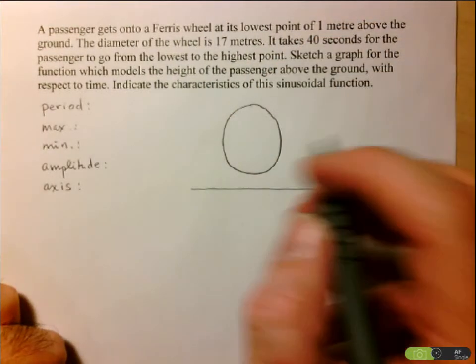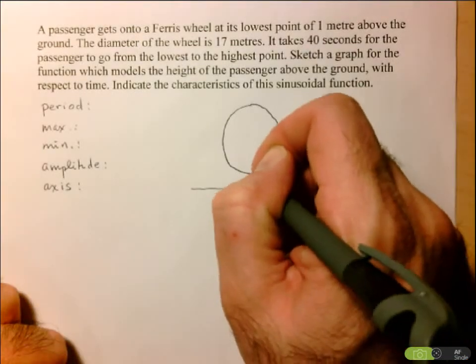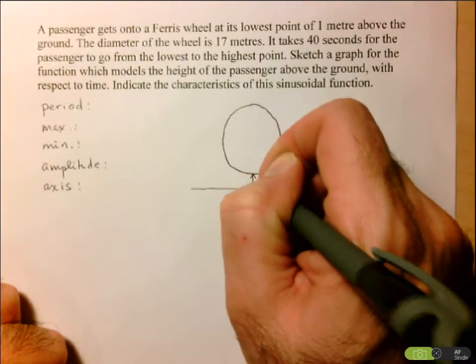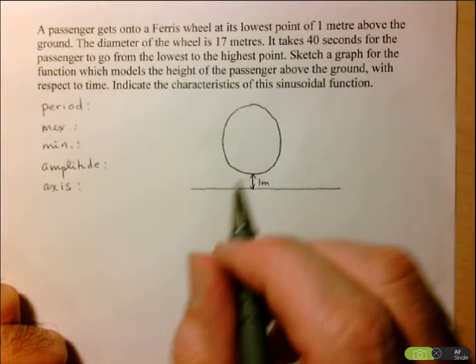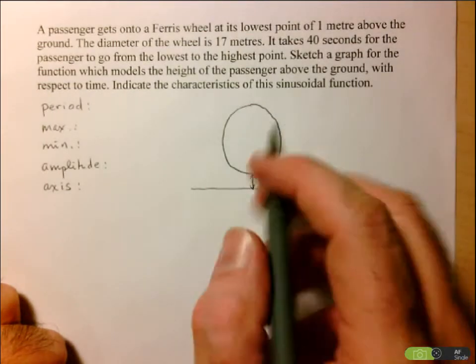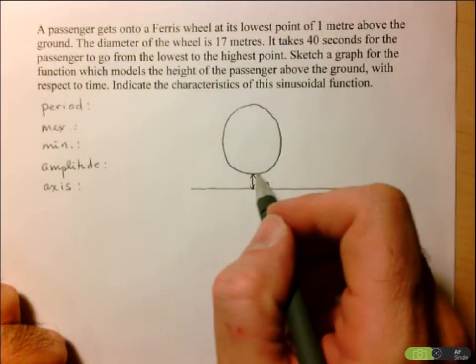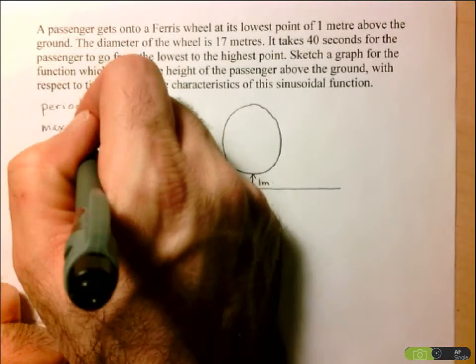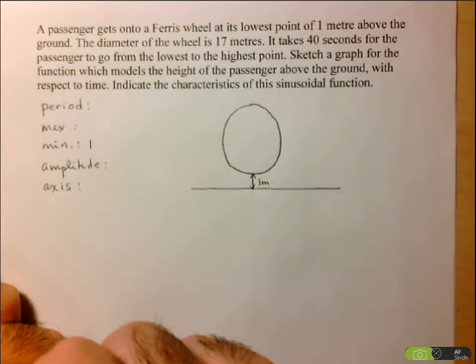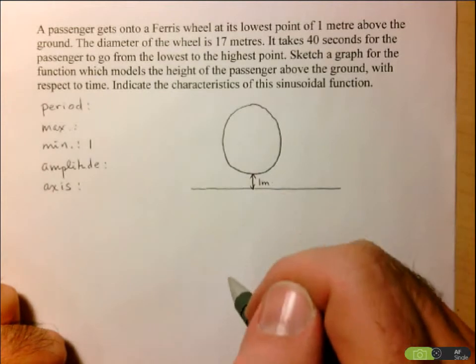We're told that the lowest point of the Ferris wheel is one meter off the ground. In terms of the height of a person on this Ferris wheel, clearly this is going to be the minimum height. So right away I'm going to input into my minimum category the value of one.